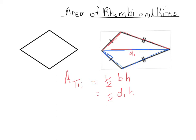We can figure out the height by halving the second diagonal. So our height is actually half of diagonal two. Since those two triangles are congruent, the height of the red triangle is half of diagonal two. So we have that the area of the red triangle is a half times diagonal one times height, and we know that height is a half of diagonal two.